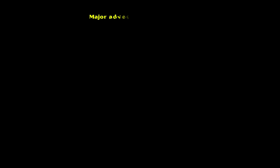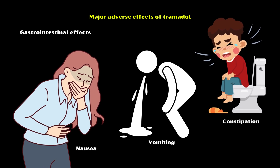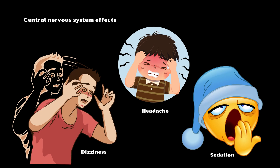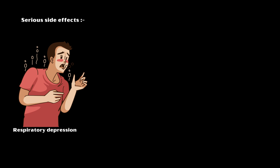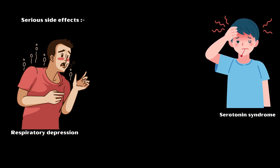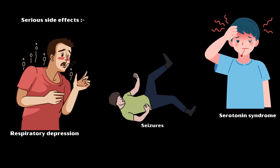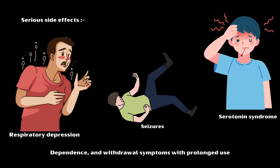Major adverse effects of tramadol include gastrointestinal effects such as nausea, vomiting, and constipation, and central nervous system effects such as dizziness, headache, and sedation. More serious side effects include respiratory depression, which is less pronounced than other opioids, serotonin syndrome especially when combined with serotonergic drugs, seizures, and dependence and withdrawal symptoms with prolonged use.